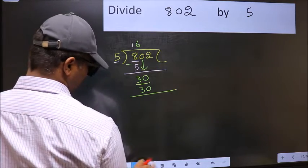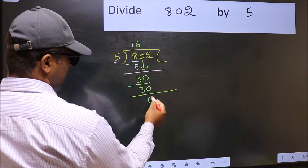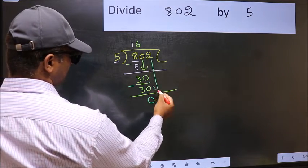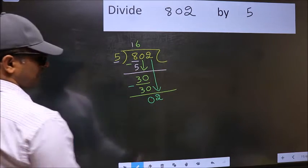Now you should subtract. 30 minus 30, 0. After this, bring down the beside number. So 2 down.